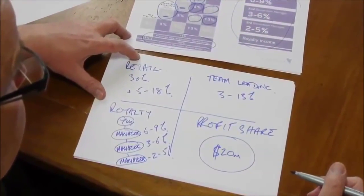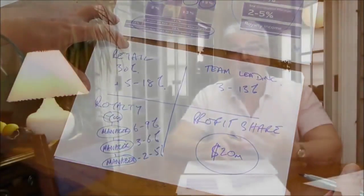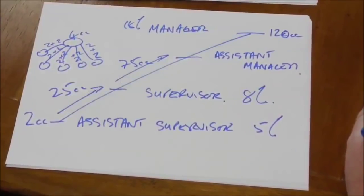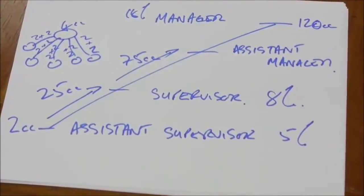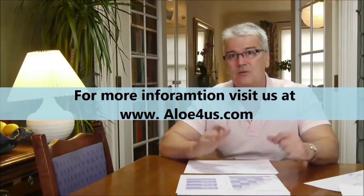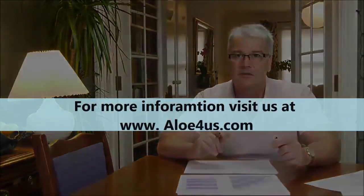We've now covered the four main areas of income: retail income including personal profits and personal bonus, team building and team leading income, royalty income, and profit share. Additionally, the company offers a car plan, providing an allowance to buy a car of your choice — up to £6,300 per year in the UK and equivalent in other countries. The key takeaway is to focus on creating sales, finding customers, introducing people into the business, and hitting these case credit thresholds to move through the marketing plan.